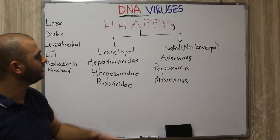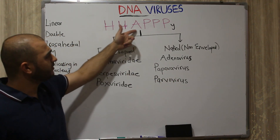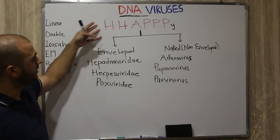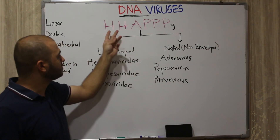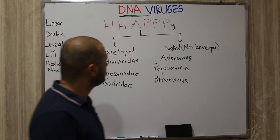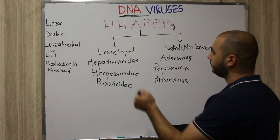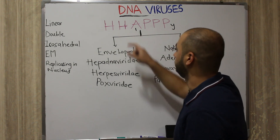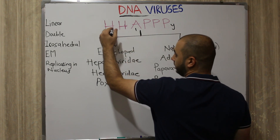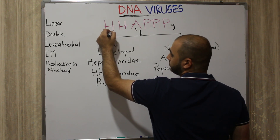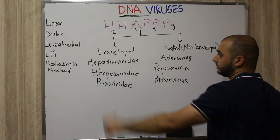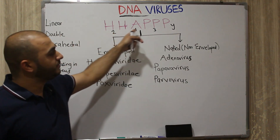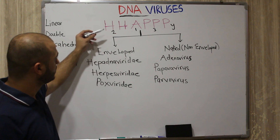I've found a good mnemonic for DNA viruses which summarizes all DNA virus families into six letters: 2H1A3P. If you're confused about how many letters of each, take it as alphabetical order — A is first, so one letter of A; H comes before in sequence, so two letters of H; then three letters of P. You can remember it as 'happy': 2H1A3P.